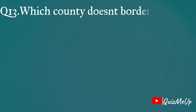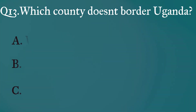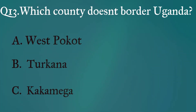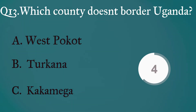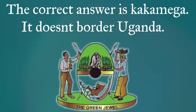Question 13: Which county doesn't border Uganda? A: West Pokot, B: Turkana, C: Kakamega. The correct answer is Kakamega — it doesn't border Uganda. The rest do.